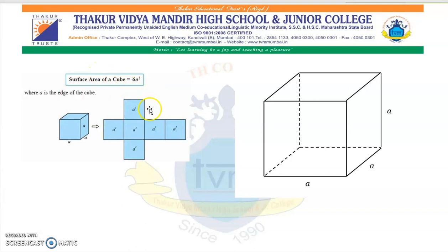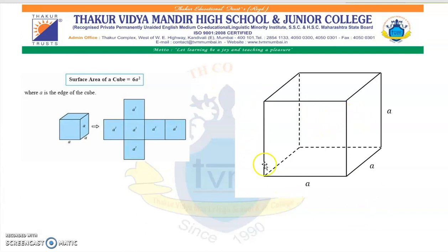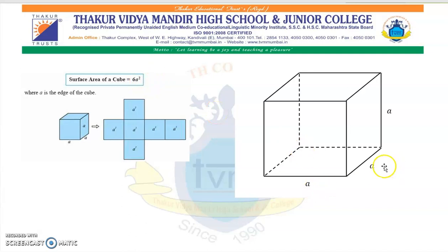Now, surface area of a cube. When you observe this cube, we see that it has six faces, and all six faces are in the shape of a square. We know that the area of a square is side × side. So, surface area of a cube is equal to 6 × A × A, which is 6A².